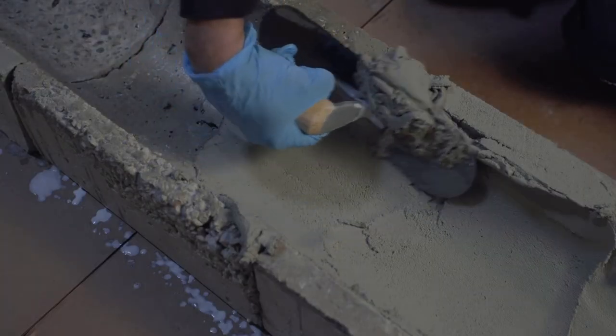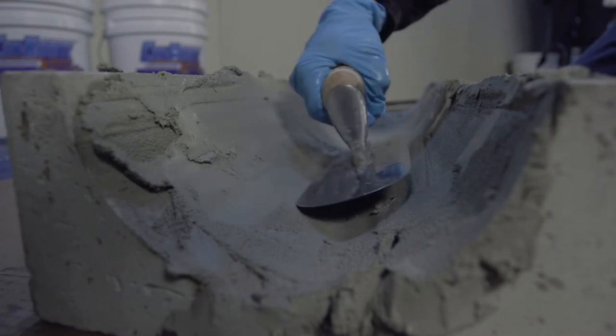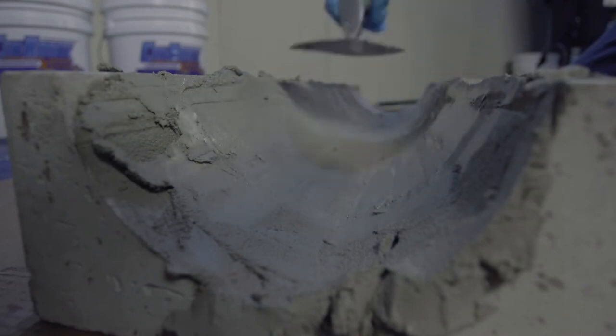After placing the concorite, wait a few minutes for it to firm up before final troweling. As the concorite begins to harden, the trowel will slide more easily over the material without sticking.